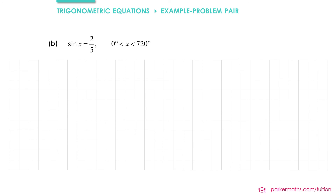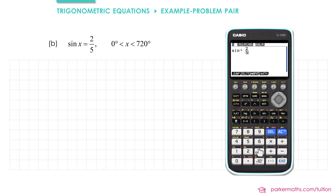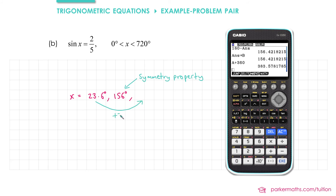In part b we're solving sine x equals two fifths between 0 and 720 degrees. As always we find the first solution by doing inverse sine of two fifths, which gives us x equals 23.6 rounded to three significant figures. We'll store that value in our calculator. Then we use the symmetry property to find the second solution: 180 minus our first solution gives us 156 degrees to 3 significant figures. Then we take the first solution and add 360 degrees, giving 384 to three significant figures, and take the second solution and add 360, giving 516 to three significant figures.